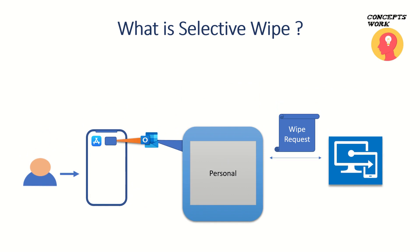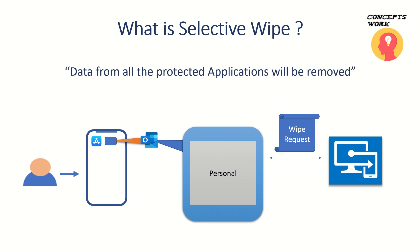This doesn't apply only to the Outlook app — any application for which you have scoped App Protection Policies, the data from all protected applications will be removed. This request is typically initiated when a user has left the organization, or their device has been stolen or lost. Selective Wipe removes enterprise-specific data from the protected application without making any changes to the personal data stored in the app.